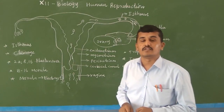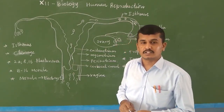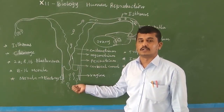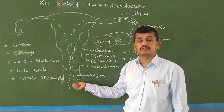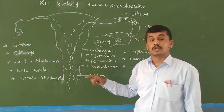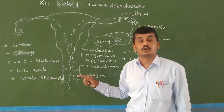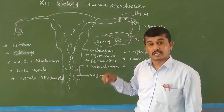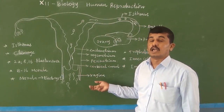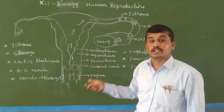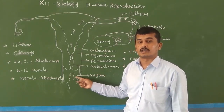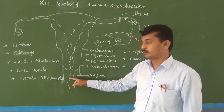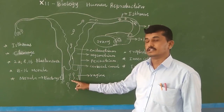Fertilization is the fusion of the male and female gamete. In human beings the male gamete is the spermatozoon, which has developed from the spermatogonium. The spermatogonium after mitosis division produces primary spermatocytes, and after meiosis division it forms secondary spermatocytes and eventually spermatozoa. After insemination, the spermatozoa enter into the vaginal part of the human female reproductive system, where the sperm uses its mitochondria and tail to move.